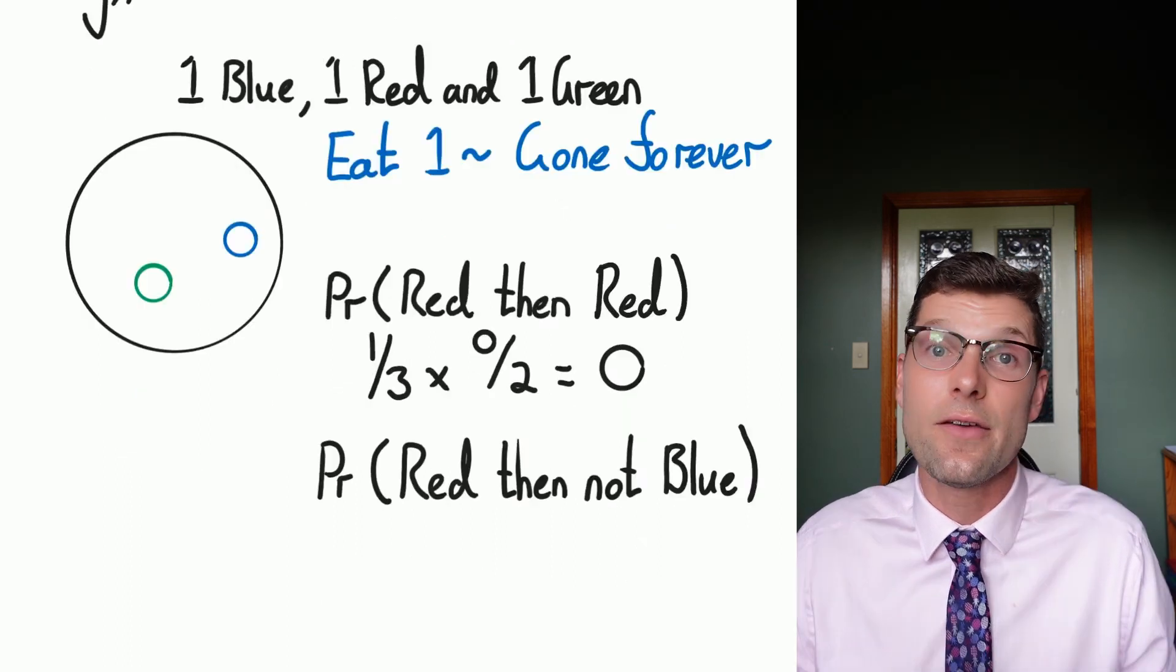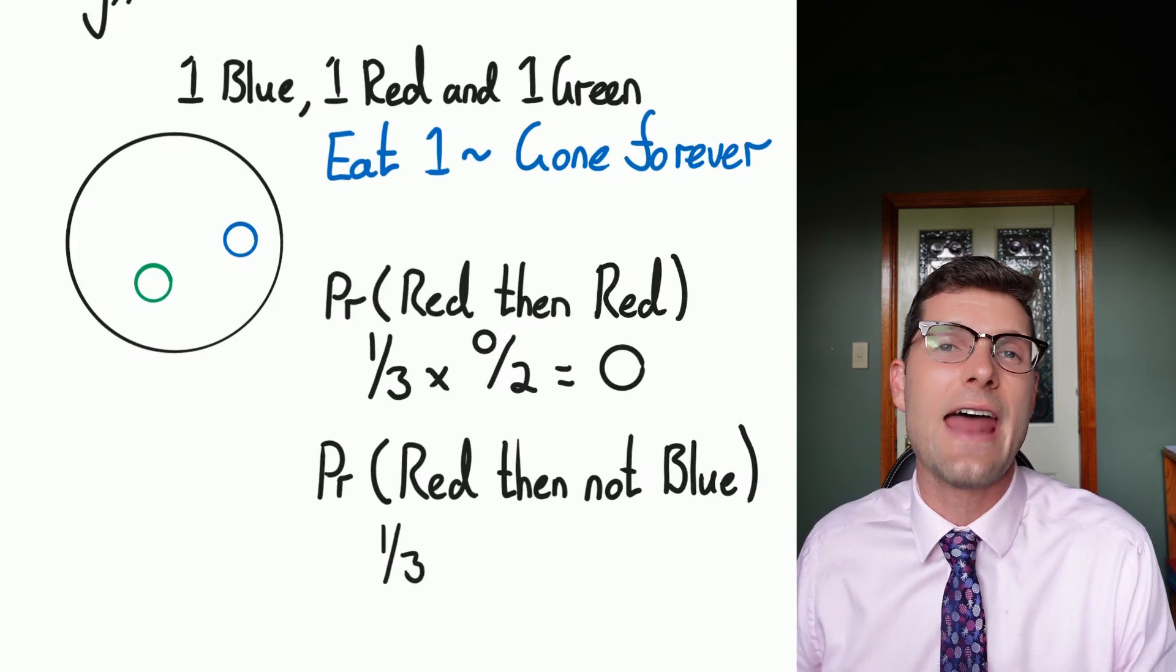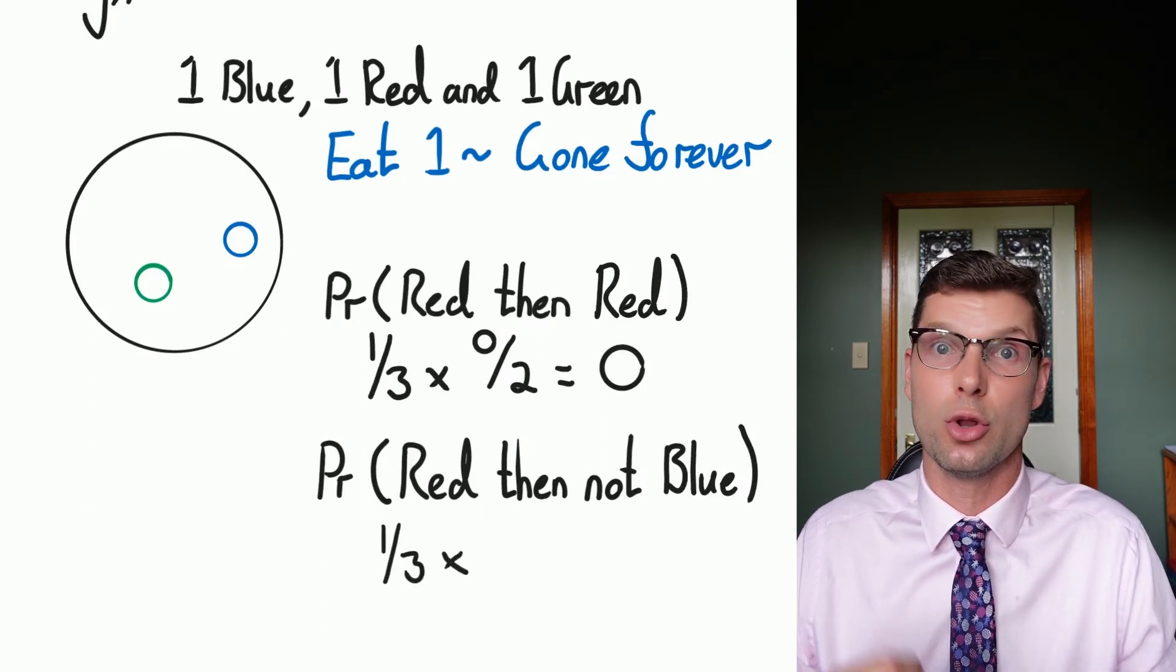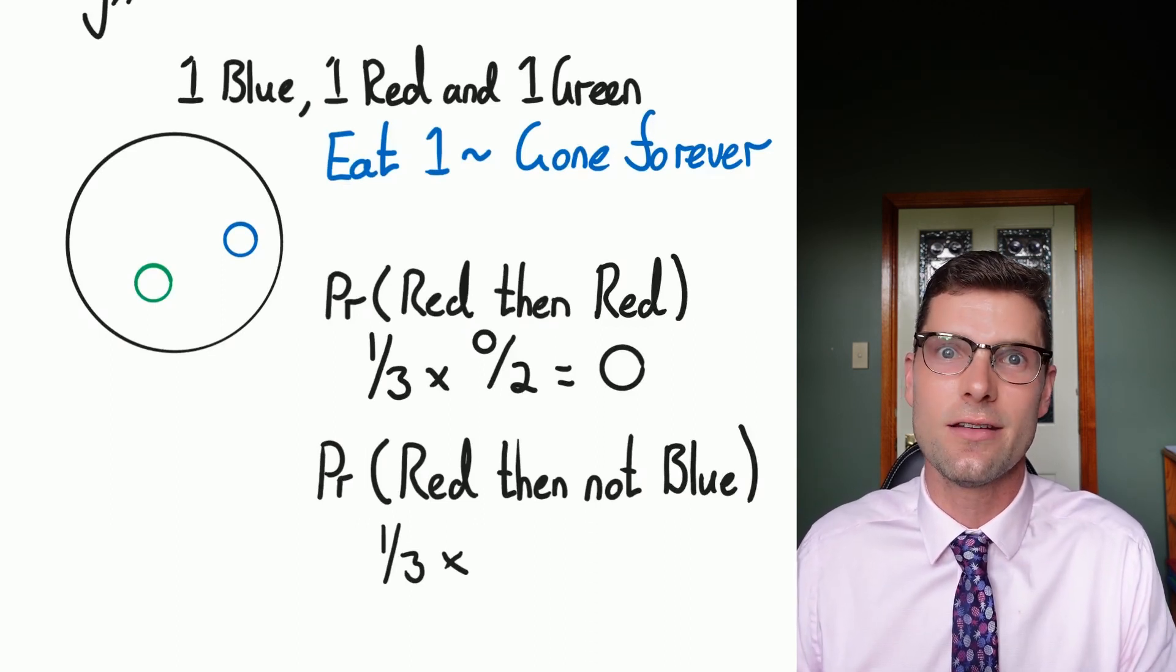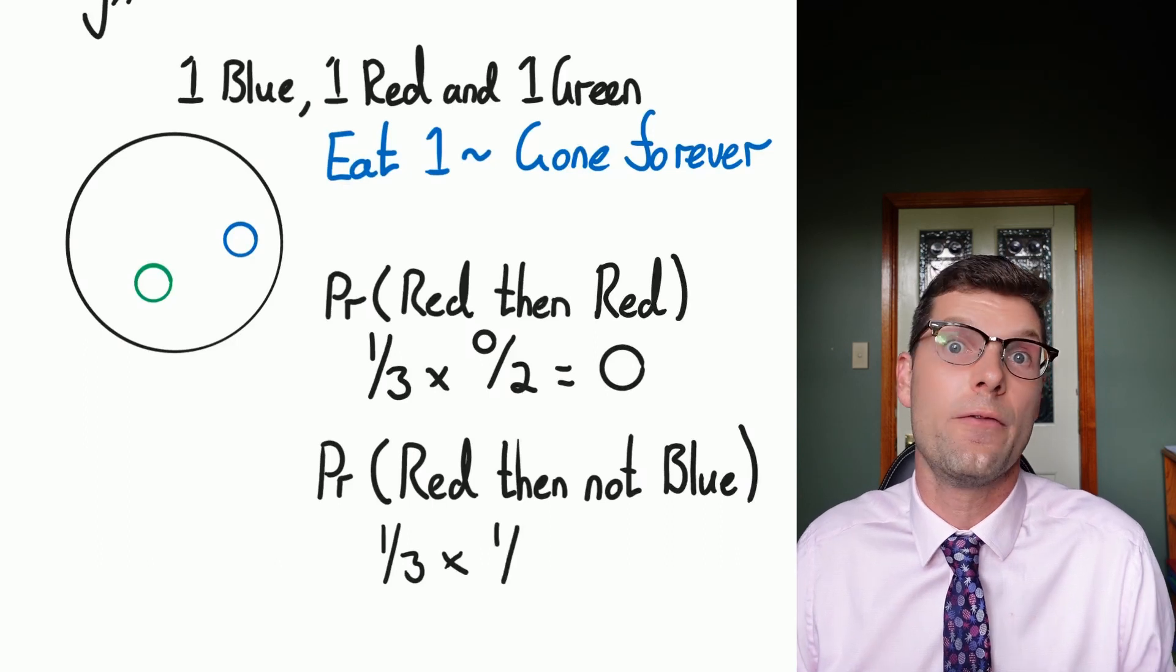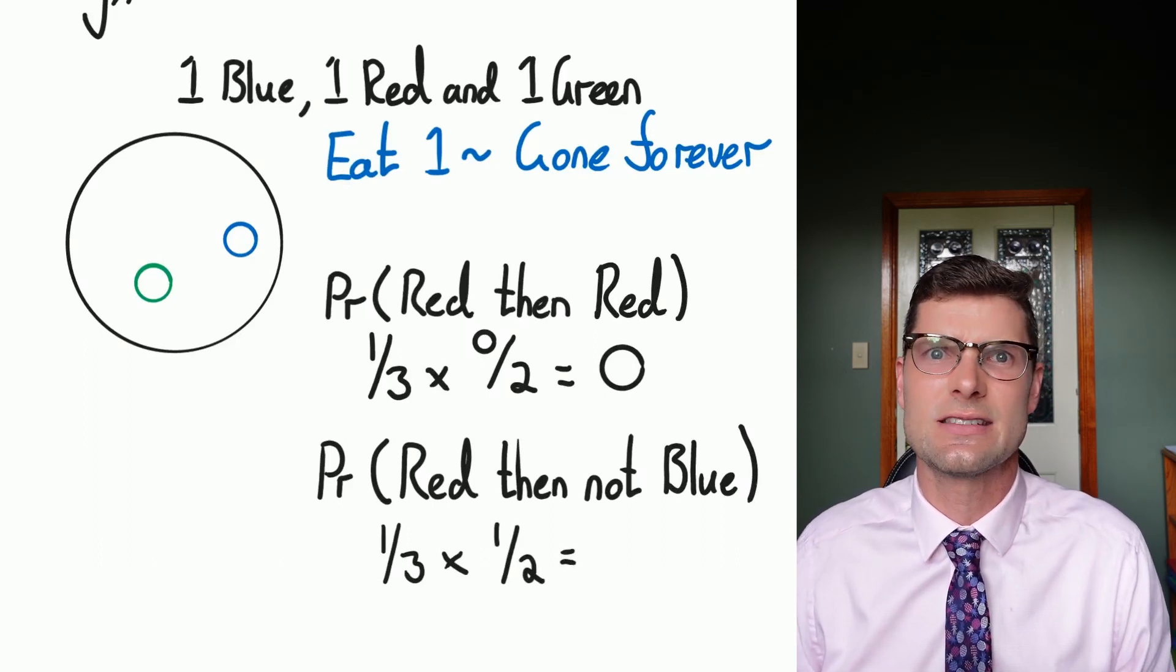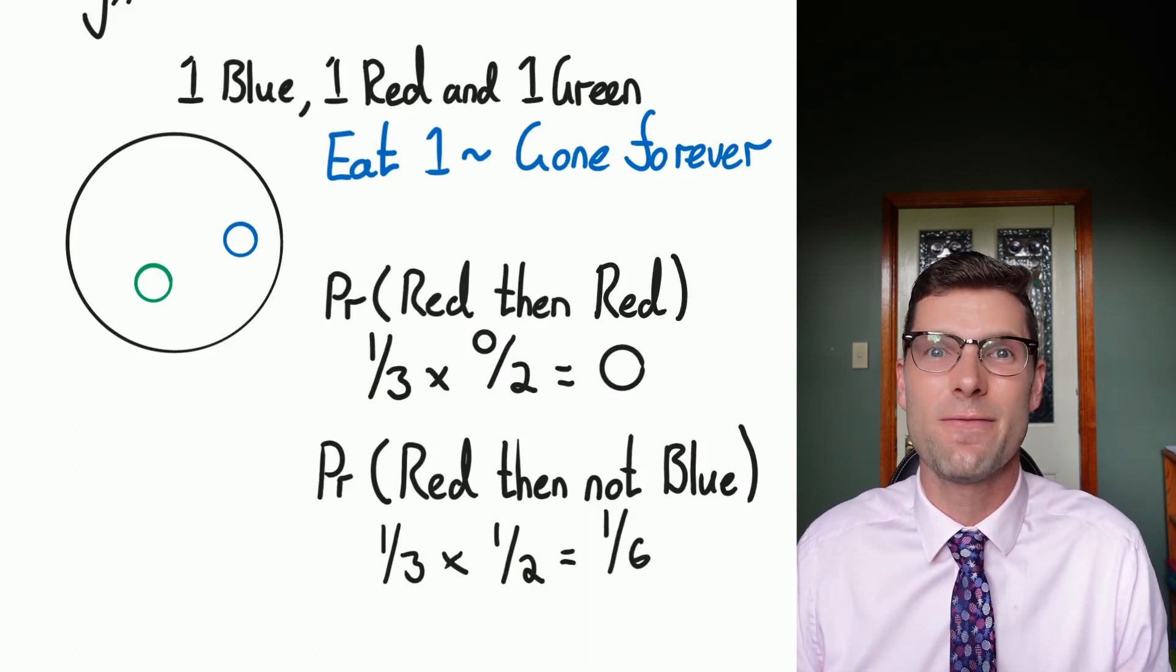And then for the next one, if I have a probability of getting a red again, one over three, and now I've got two options for my second go, I could get blue or green. So I said the probability of not blue, which is really just green, and that's going to be one over two or 50%. Now all I've got to do is multiply these two things together. A third times a half equals one over six. And that's my final answer.